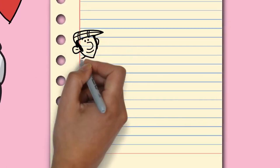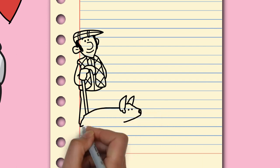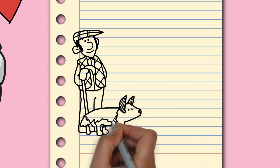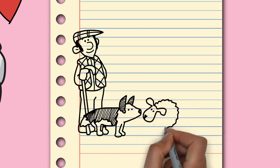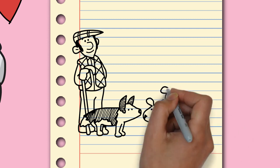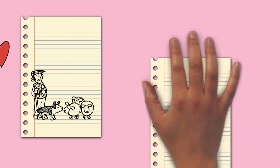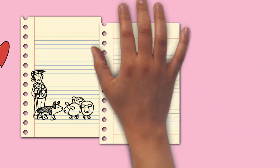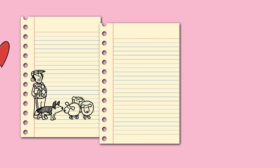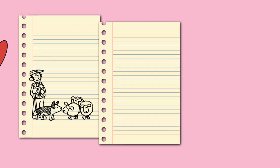Sheep husbandry is practiced throughout the majority of the inhabited world and has been fundamental to many civilizations. In the modern era, Australia, New Zealand, the southern and central South American nations, and the British Isles are most closely associated with sheep. There is a large lexicon of unique terms for sheep husbandry which vary considerably by region and dialect. A group of sheep is called a flock.